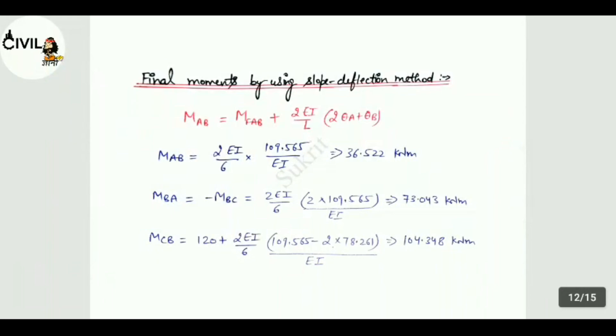For MBA, MF_BA is zero. So formula is 2EI/L times 2θ_B plus θ_A, but θ_A is zero. So equals 2EI/6 into 2 into 109.565 divided by EI. So MBA equals minus MBC that is 73.043 kNm. Now for MCB, MF_CB plus 2EI/L times θ_B plus 2θ_C. θ_C will be negative because delta 2 value was minus 78.261 divided by EI. So 120 plus 2EI/6 in bracket 109.565 minus 2 into 78.261 divided by EI. So MCB value is 104.348 kNm.